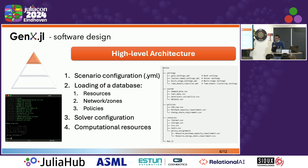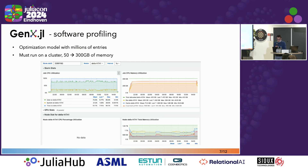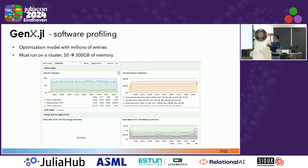For example, you can specify the algorithm you want to use, the tolerance, or where you want to stop the optimizer. Then you run the simulation and collect the results. One significant challenge with capacity expansion models is that they scale quadratically with the number of zones and also with the number of time steps, which limits the simulation horizon and means HPC infrastructures are almost always needed.